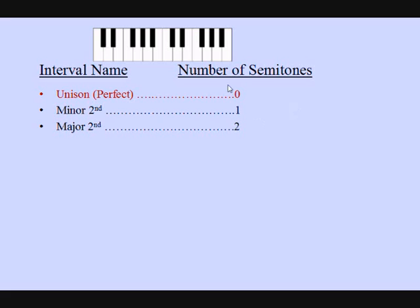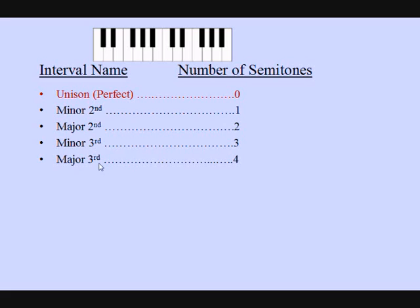If we go from C to E flat, we count one, two, three — that's three semitones, which makes a minor third. If we go from F to A, we count one, two, three, four semitones — that makes a major third. If we go from B to E, we count one, two, three, four, five — that makes a perfect fourth.